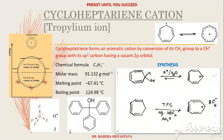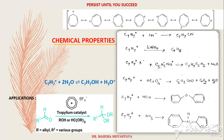Moving further, the tropylium cation gives 7 resonating structures. These 7 resonating structures are formed by the transfer of the positive charge onto all 7 carbon atoms, as shown in the white figure in square brackets. They easily explain the considerable stability of the tropylium cation, and these resonating structures contribute to its extra stability.